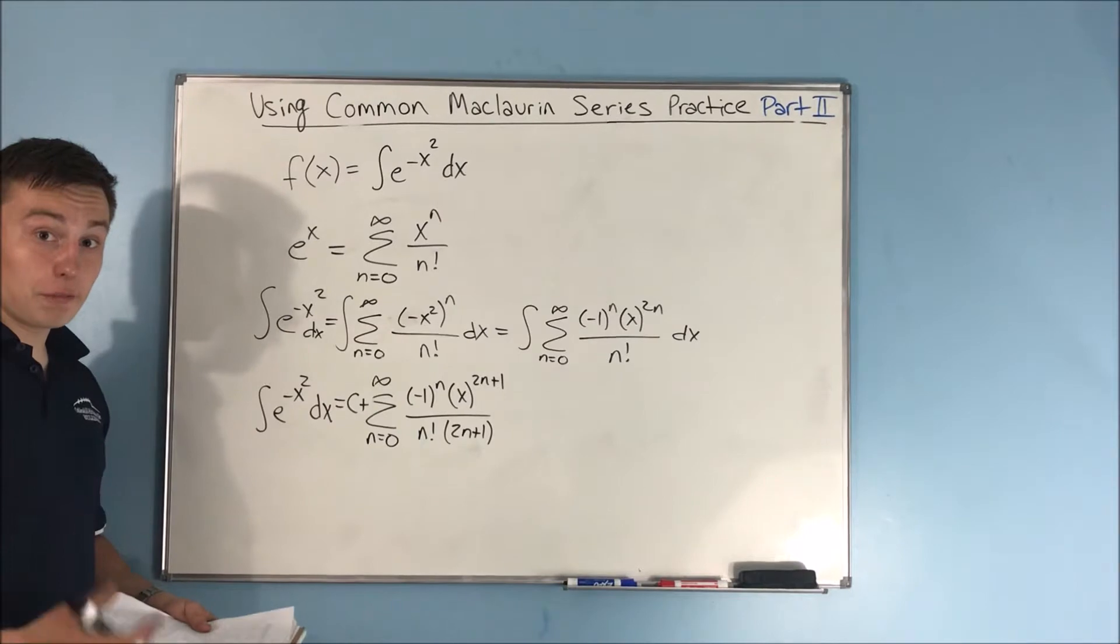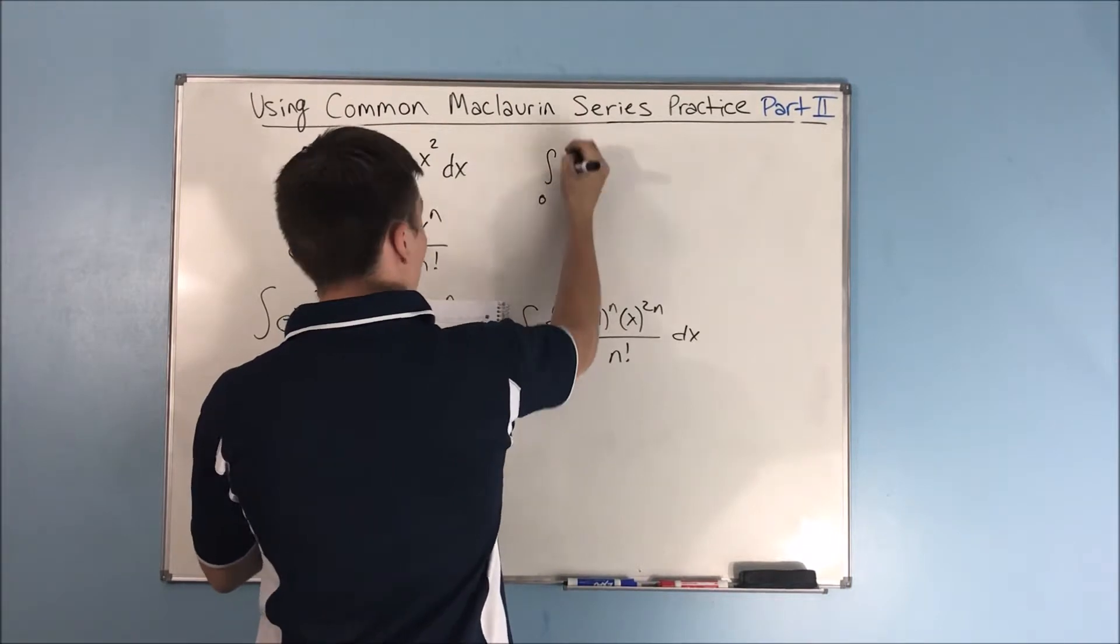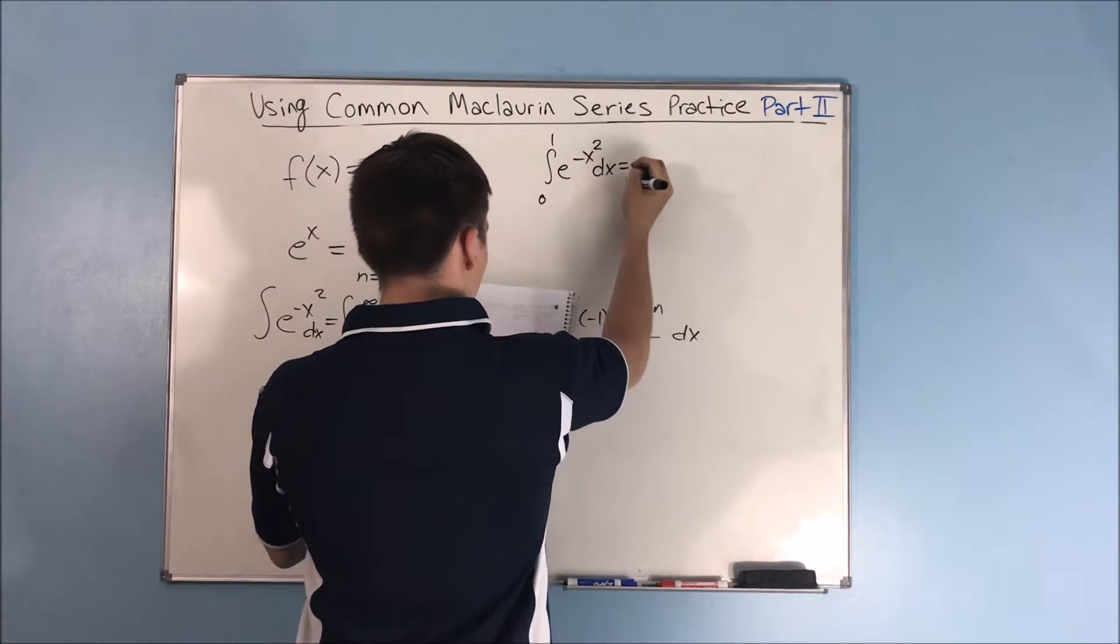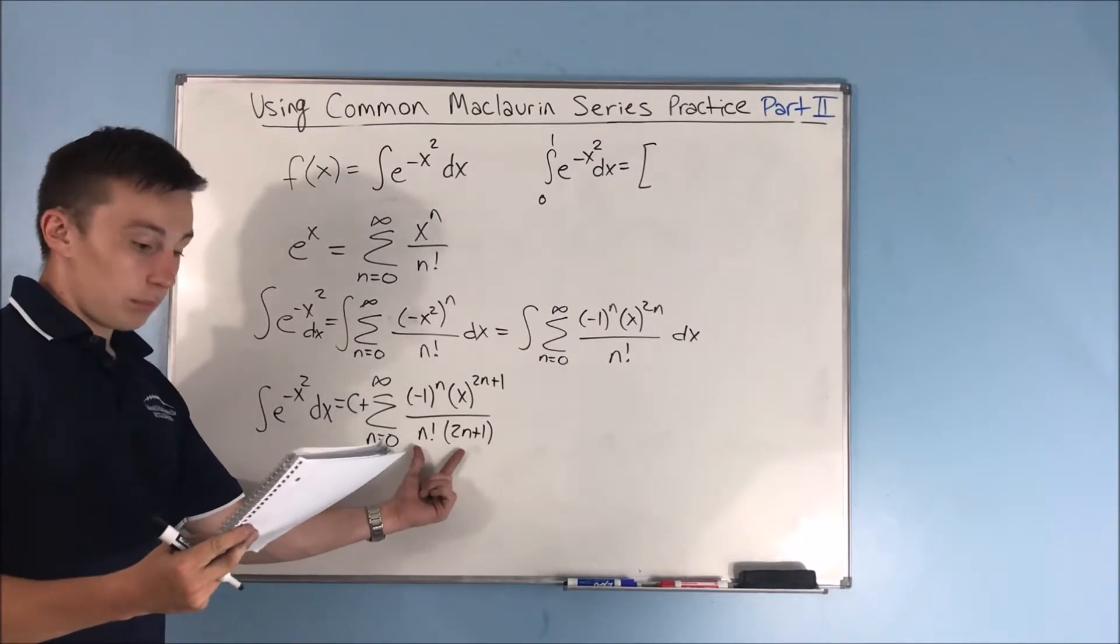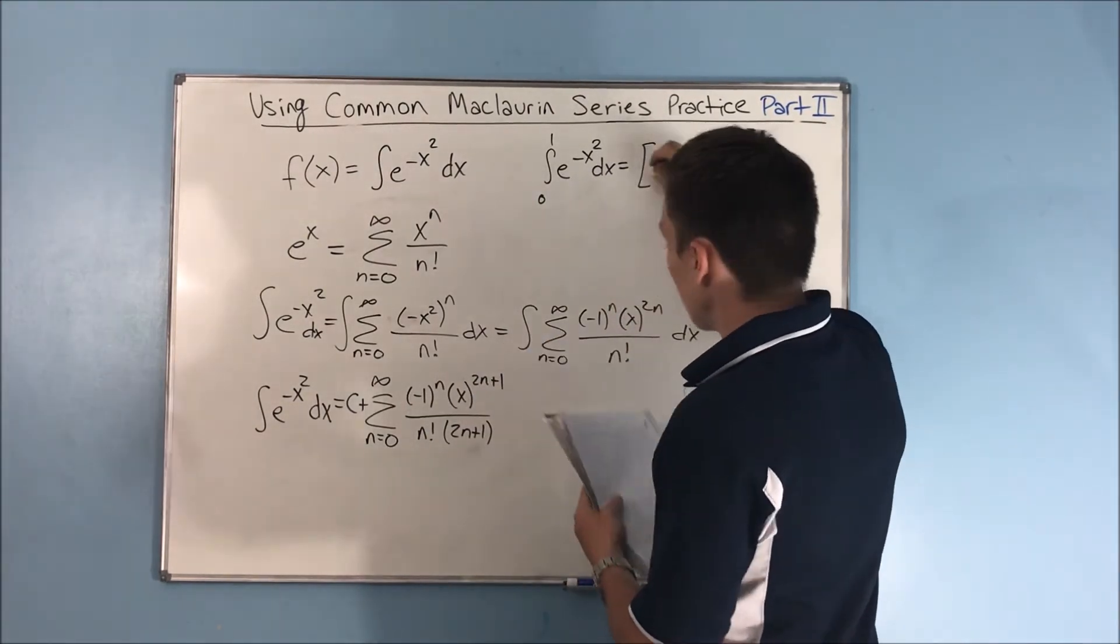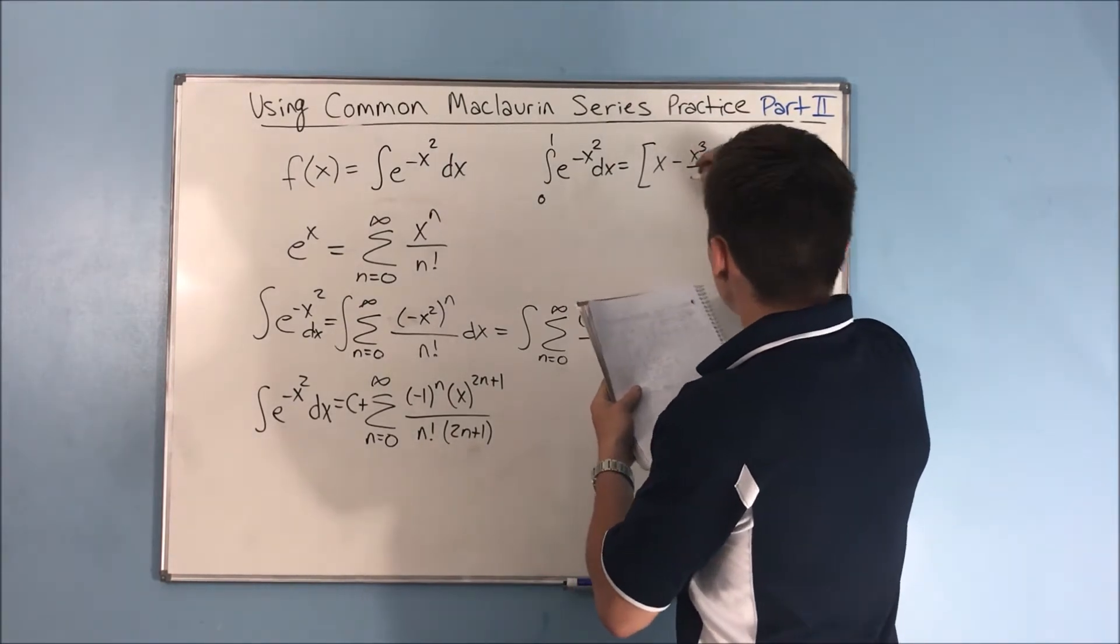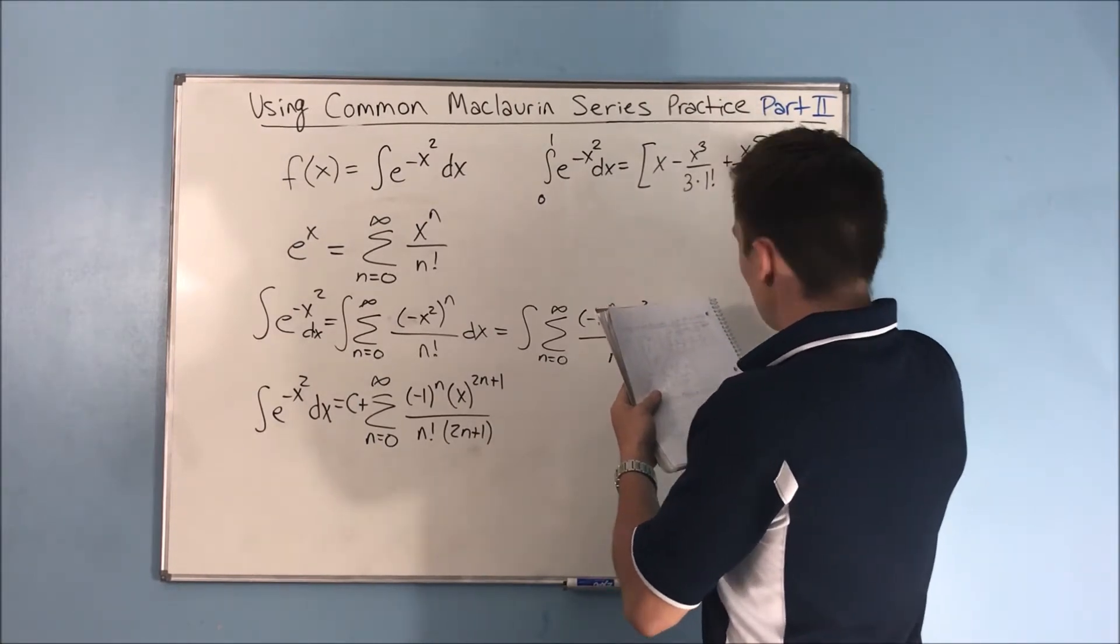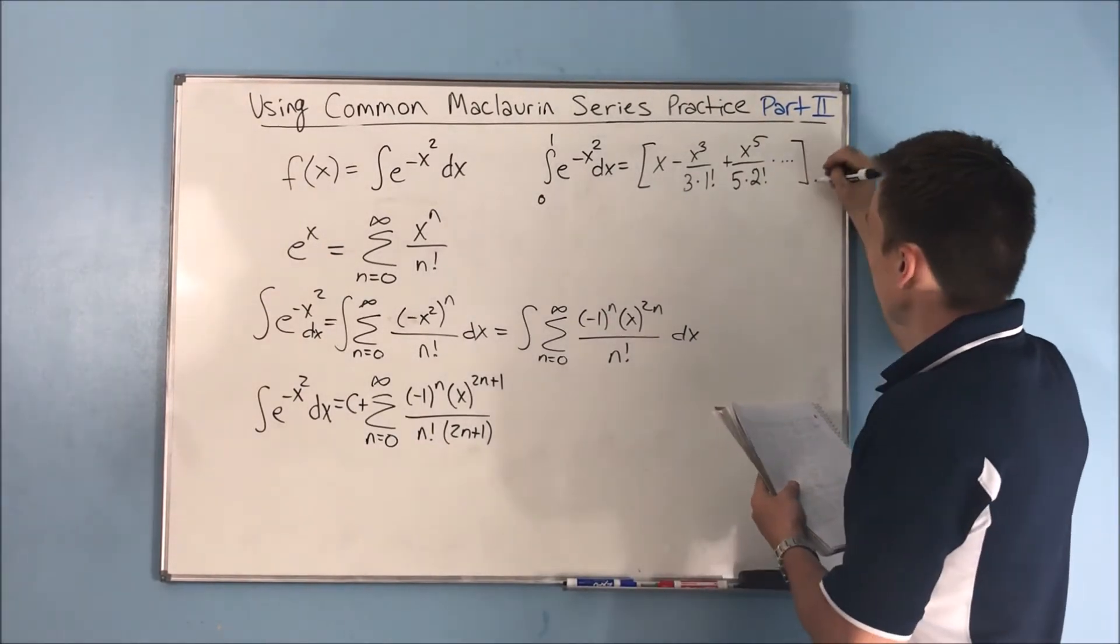Now if we wanted to integrate from 0 to 1, the integral from 0 to 1 of e to the negative x squared dx will be equal to this sum evaluated from 0 to 1. When you write out this series, you get x minus x cubed over 3 times 1 factorial plus x to the fifth over 5 times 2 factorial, on and on and on, and you're going to evaluate that whole thing from 0 to 1.